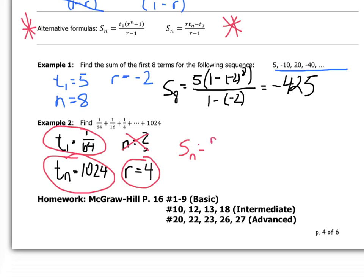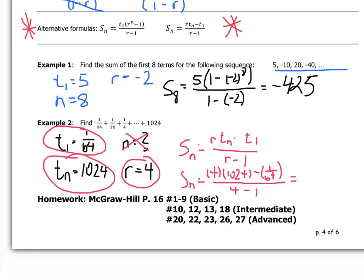Since we don't know n, we use the alternate formula: Sn equals (r times tn minus t1) divided by (r minus 1). So Sn equals (4 times 1024 minus 1/64) divided by (4 minus 1). Typing that into the calculator gives approximately 1365.328125. That's it — now try the homework from page 16, good luck!